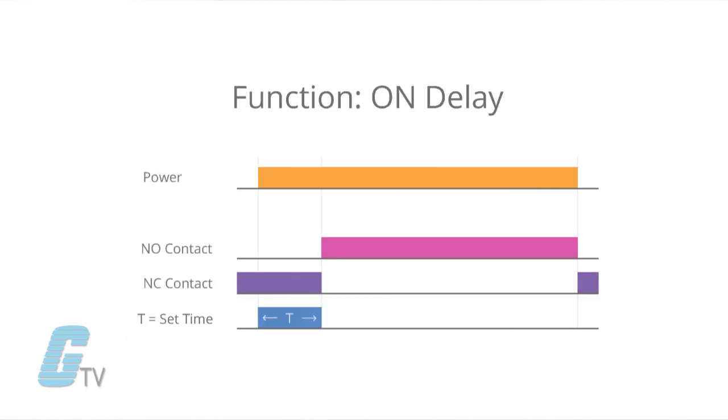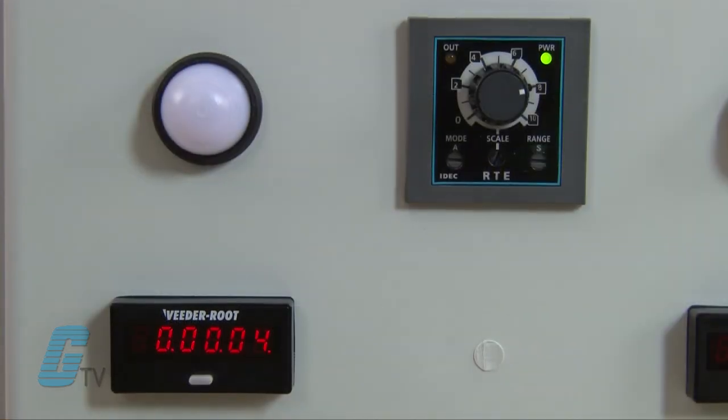Taking a look at an on delay timer, the timing function begins when power is applied. The contact will not change state until after the time elapses. It will then change state and turn on until it is removed from the power source.